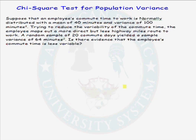Suppose that an employee's commute time to work is normally distributed with a mean commute time of 40 minutes and a variance of 100 minutes squared. In an effort to try to reduce the variability of his commute time, the employee maps out a more direct but less highway miles route to work. A random sample of 20 commute days yielded a sample variance of 64 minutes squared. We want to know if there is evidence that the employee's commute time is less variable.